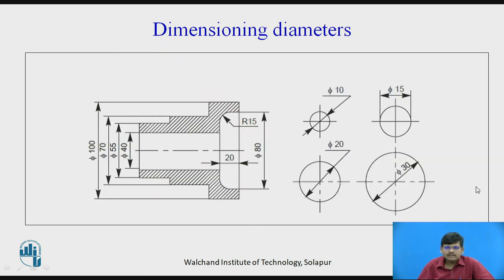Then we have dimensioning methods for diameters. These are some of the dimensioning methods you can use for dimensioning diameters. You can use the symbol phi for diameter. For an arc you use radius (R). For a complete circle you use the symbol phi with the value of diameter. So phi represents diameter and R represents radius.